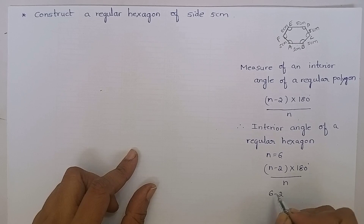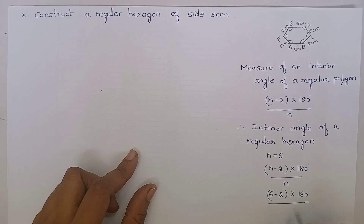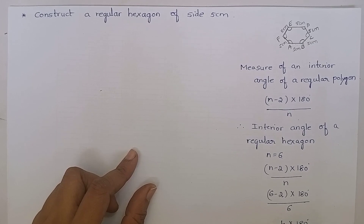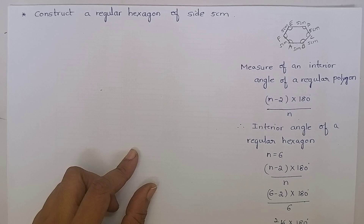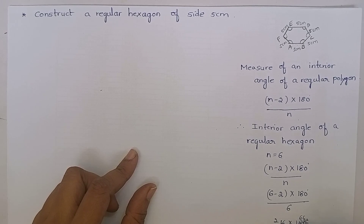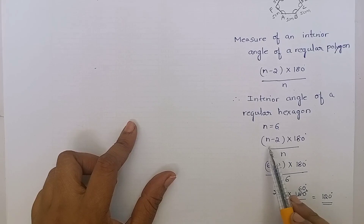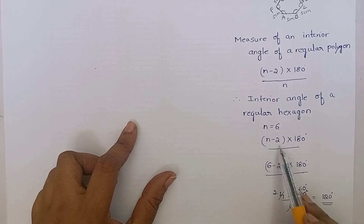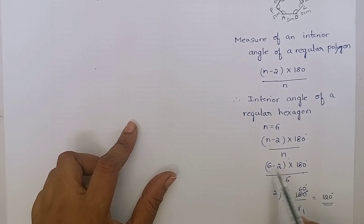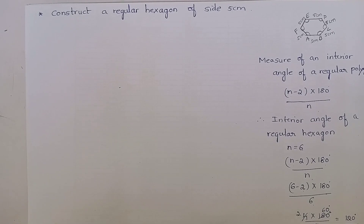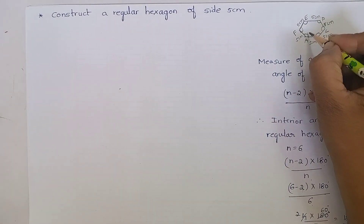That is (6 minus 2) into 180 degrees divided by 6. 6 minus 2 is 4. So 4 into 180 degrees divided by 6. After cancellation, you will get 120 degrees. It means each angle in a regular hexagon measures 120 degrees.